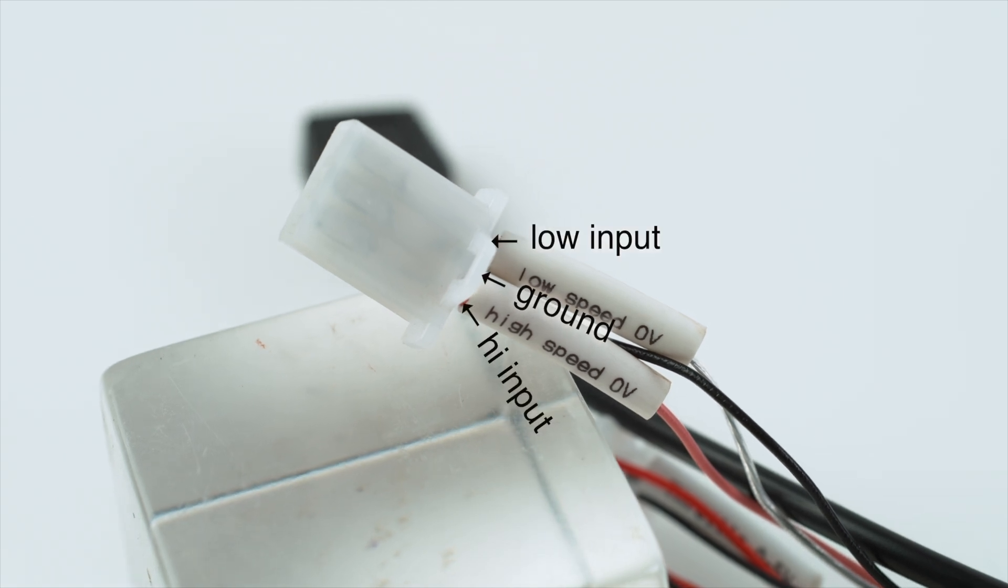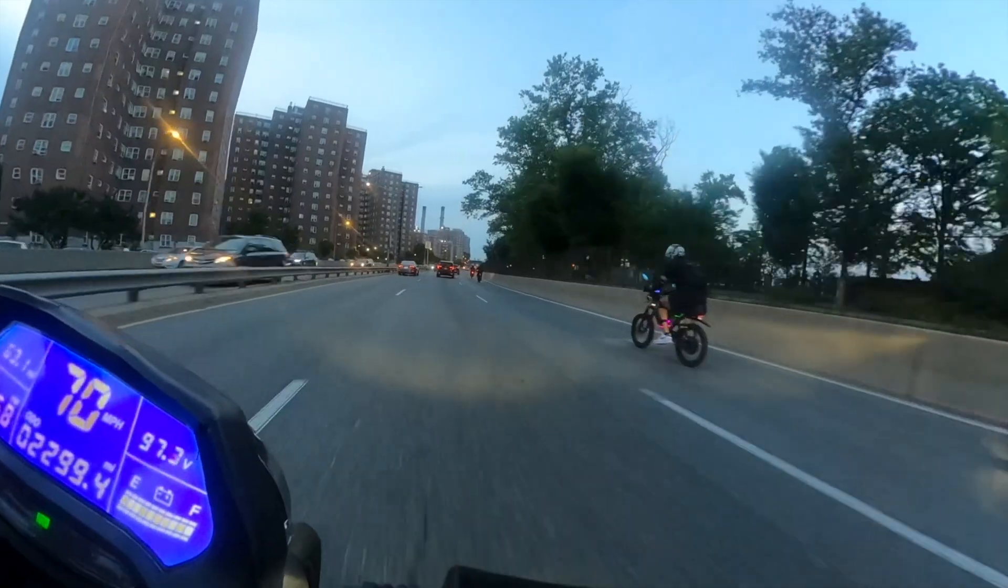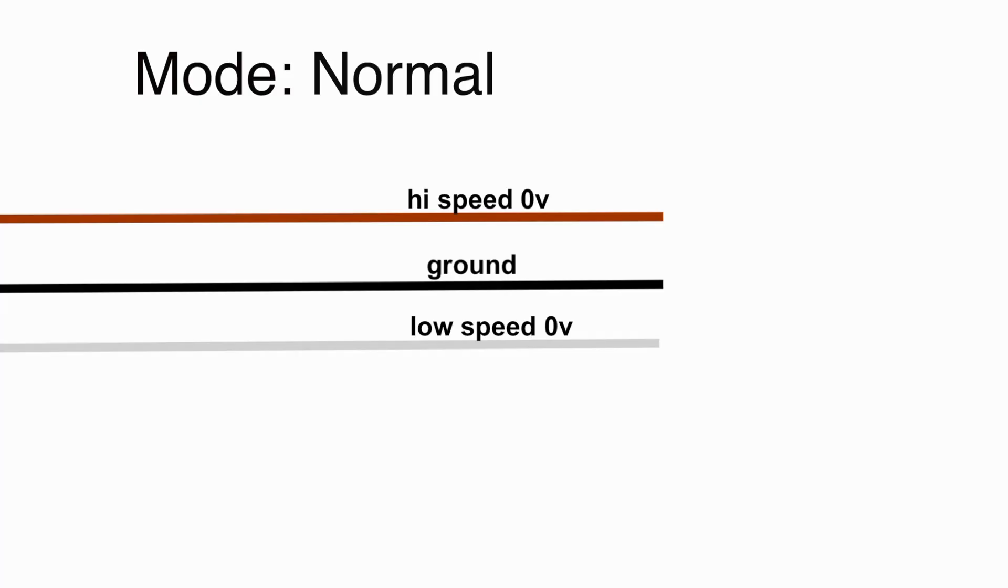Up next let's talk about the three speed wire. This speed controller lets us set three different speed settings so we can have an eco, normal, and a sport mode for our bike. By connecting the center wire to the wire labeled low we'll be in eco mode. If we connect it to high we'll be in sport mode and if we leave it untouched we'll be in normal mode.